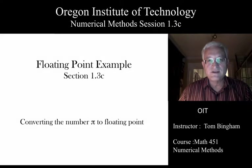In our last session, we discussed in some detail how to construct a floating point number starting with a decimal number. In this section, we're going to try it. We're going to take the number pi and convert it to floating point.